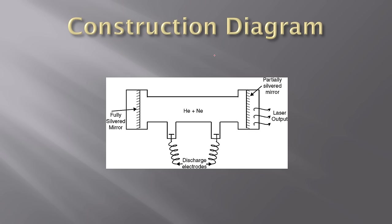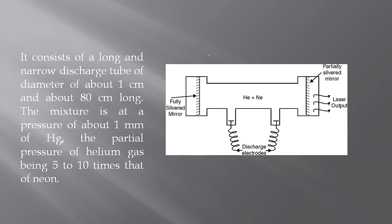This is the construction part of Helium Neon Laser. I will discuss each and every part in detail. It consists of a long and narrow discharge tube of diameter of about 1 cm and about 80 cm long.